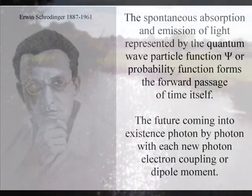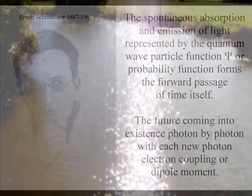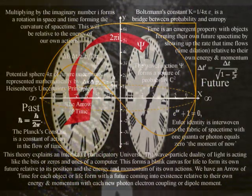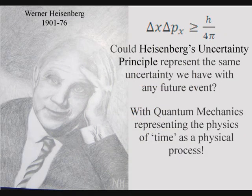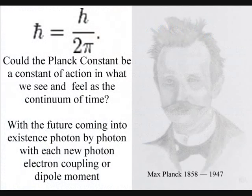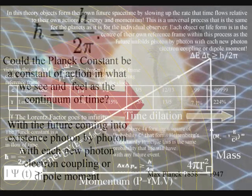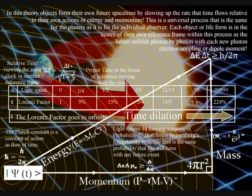The quantum wave-particle function of quantum mechanics represents the spontaneous absorption and emission of light, forming a square of future probability, with the mathematics of quantum mechanics representing the physics of time as a physical process. What we see in our everyday life as an uncertain future is formed by a physical process that, at the smallest scale, is represented mathematically by Heisenberg's uncertainty principle, representing a potential sphere of future uncertainty, with the Planck constant representing a constant of action within the interactive geometrical process of space-time that we see and feel as time, in three-dimensional space.